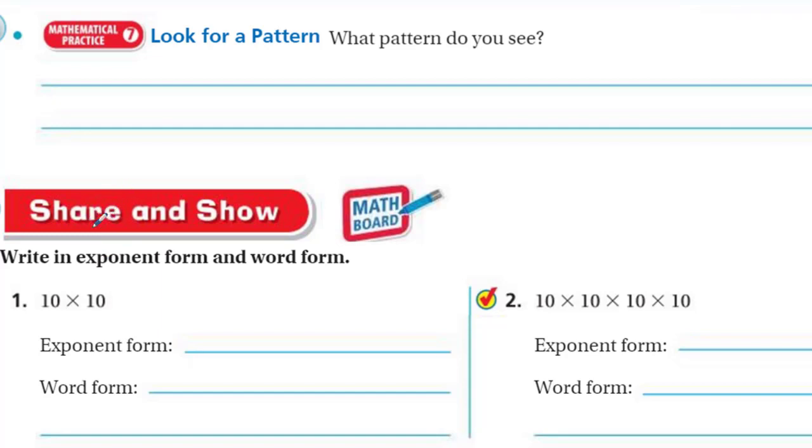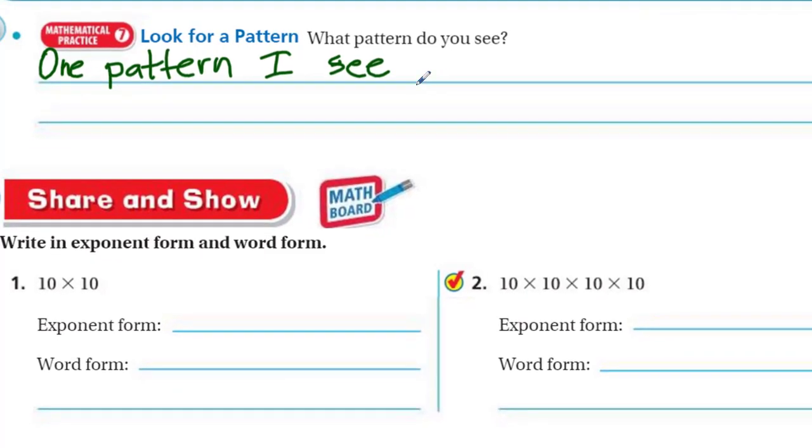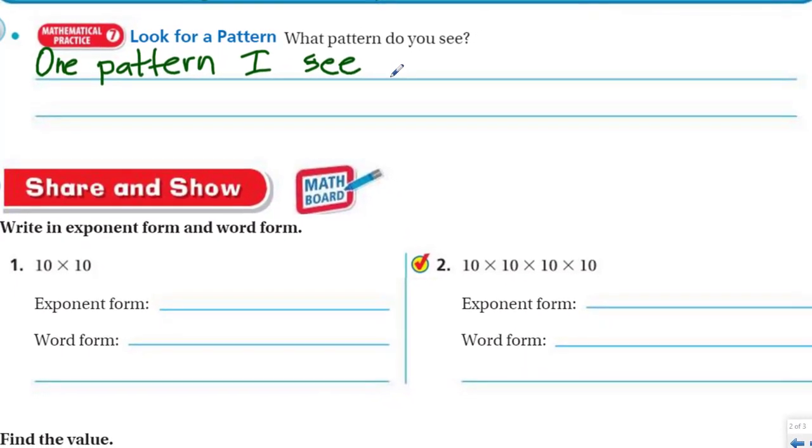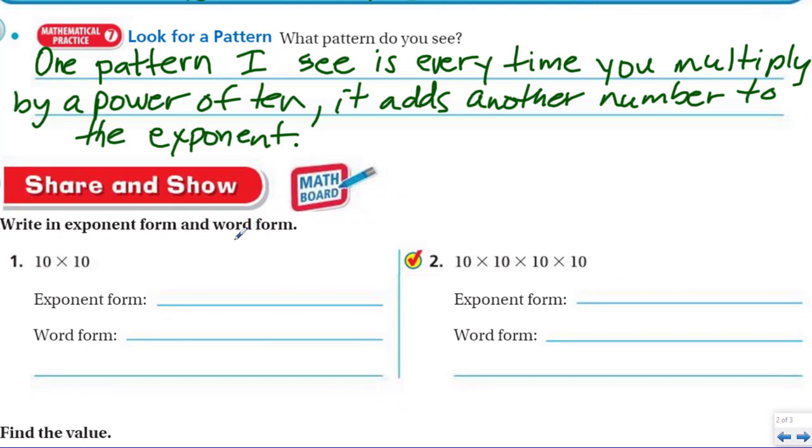Mathematical practice 7, look for a pattern. What pattern do you see? I'm assuming that they're referring to the problem up above. One pattern I see is every time you multiply by a power of 10, it increases the exponent by 1. The same thing too, if you look at the zeros, the three zeros, that's what I mean. It matches your exponent. So if you have 3,000, that's 10 raised to the 3rd power. That makes it pretty easy to see.